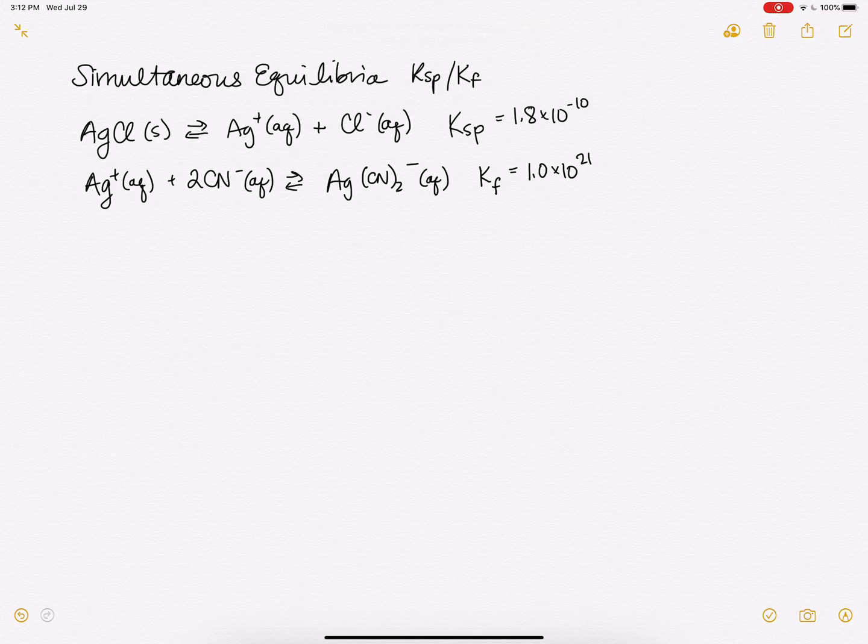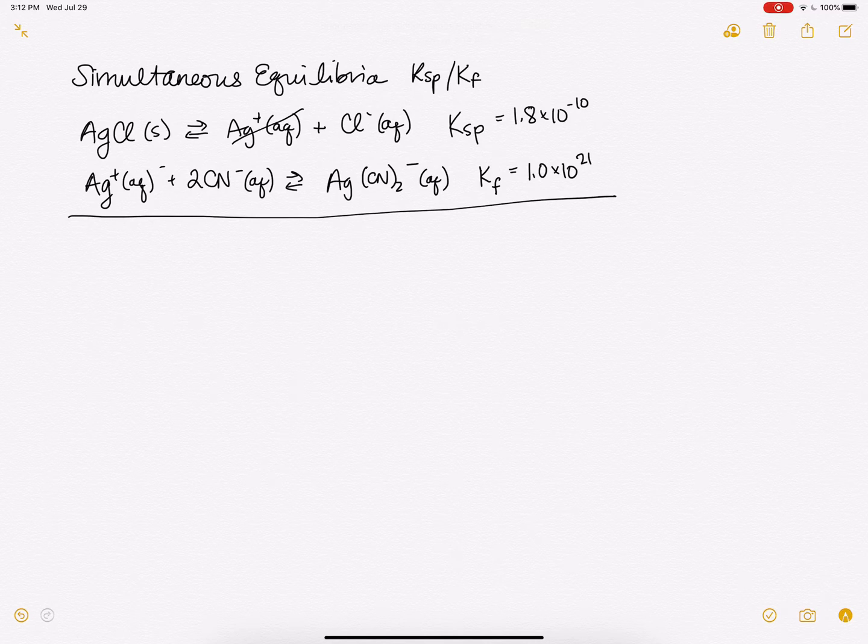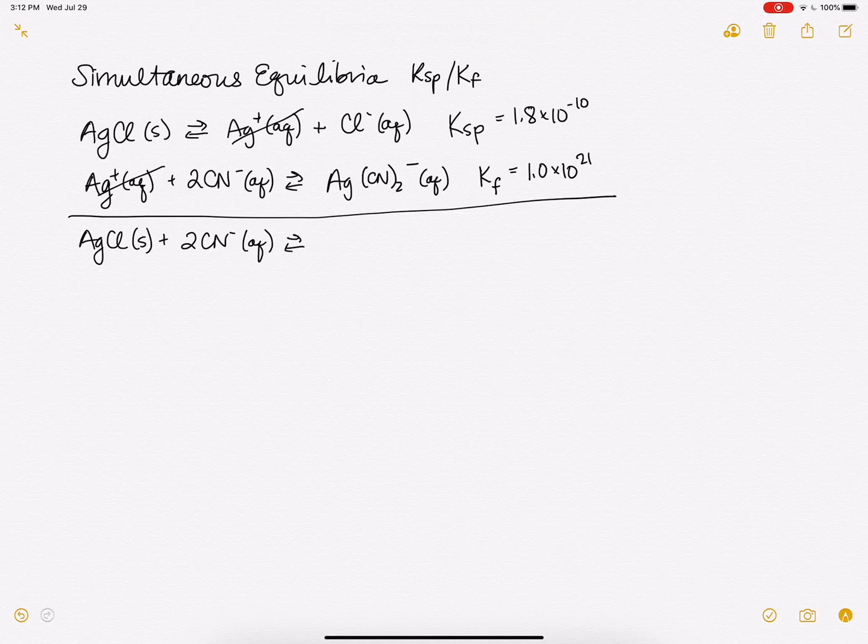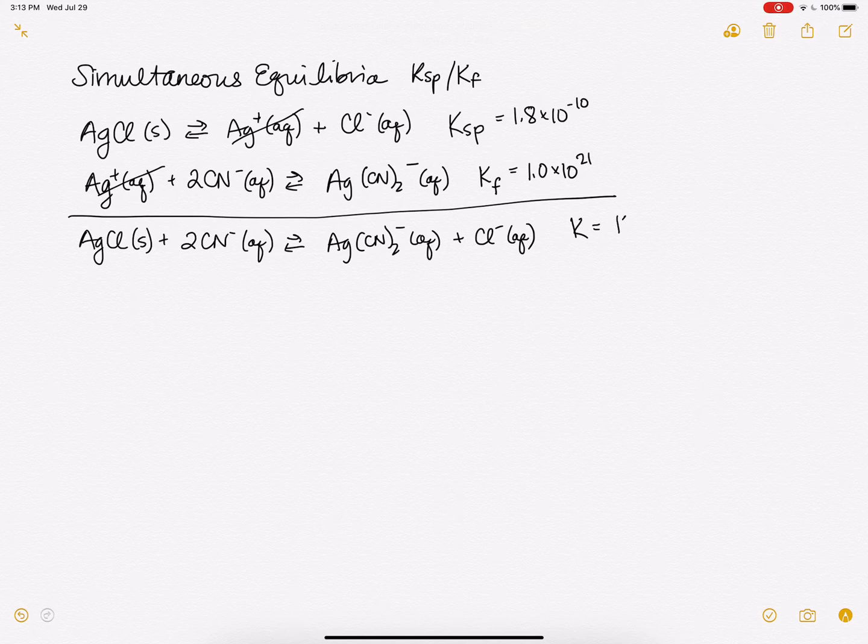Okay, so now let's say we want to get our overall K. We can go ahead and add these reactions together. We get our silver chloride plus cyanide and we're going to make our complex ion and also have some chloride ions as well. And our new K is just going to be Ksp times Kf because we added those reactions together we multiply the K's, and so our K is 1.8 times 10 to the 11th, so very large.